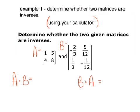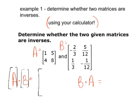Example 1: Determine whether two matrices are inverses. We're going to be using your calculator, so go ahead and get it out. Enter the first matrix into your calculator as matrix A, and the second into matrix B. Then select matrix A and multiply it by matrix B. When you do that, your answer is the identity matrix.